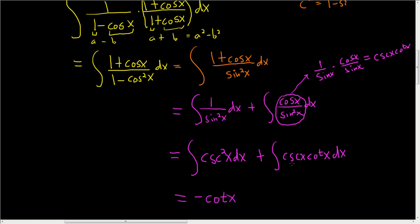Likewise, what's a function whose derivative is cosecant cotangent? Well, the derivative of cosecant is negative cosecant cotangent. So here we don't have a negative, so this will be negative cosecant x plus c.